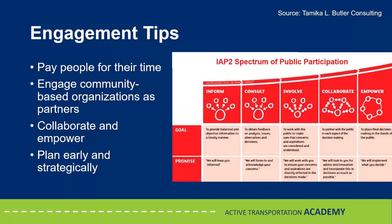Engage community-based organizations as partners. Grassroots organizations can play a really important role because they are trusted entities and they are gatekeepers to these communities. Ensure that your community-based partners have the resources they need, whether it's promotional materials in different languages or spaces to hold meetings. Going back to that idea of moving from outreach to engagement — this graphic is from the International Association of Public Participation, and it shows the spectrum of influence the public can have over planning or decision-making processes. It identifies five levels of participation: inform, consult, involve, collaborate, and empower, and we strive for our planning processes to fall under those last two categories of meaningful and profound public engagement.